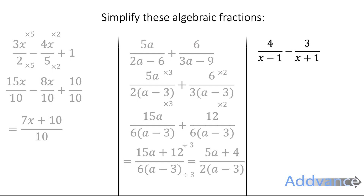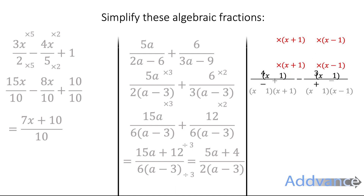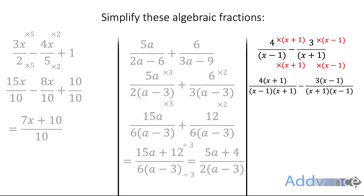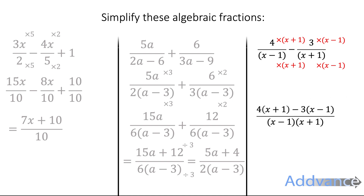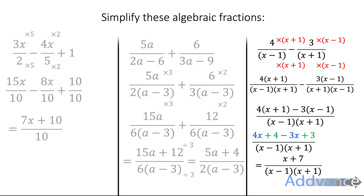Now we've got this fraction. We're going to multiply the top and the bottom by x plus 1 and x minus 1, which will give us a common denominator of x minus 1 times x plus 1. We subtract the top, then expand. Notice the minus 3 times minus 1 gives a plus 3 — people always make mistakes there with negative numbers. That simplifies: 4x minus 3x becomes x, and 4 plus 3 becomes 7. And that is the final answer.